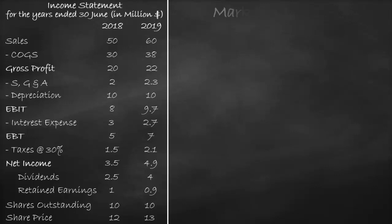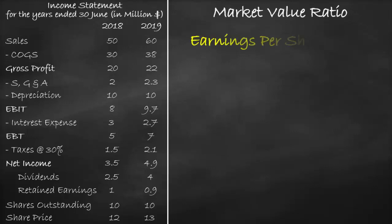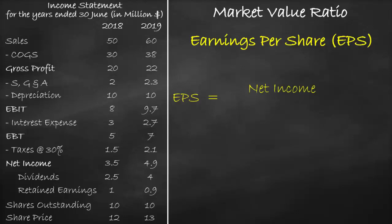An example of a market value ratio is earnings per share. Earnings refers to a return level — either net income or EBIT. Per share means divided by the number of shares, which is called shares outstanding. So the name earnings per share refers to net income divided by shares outstanding.